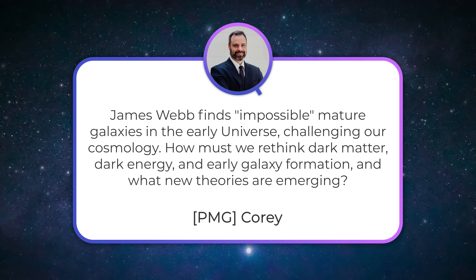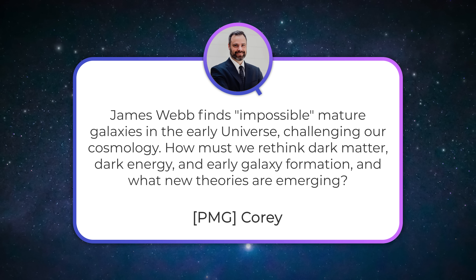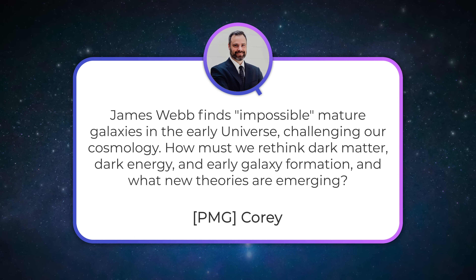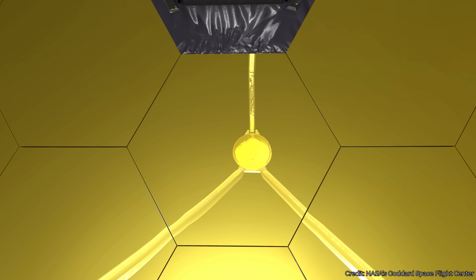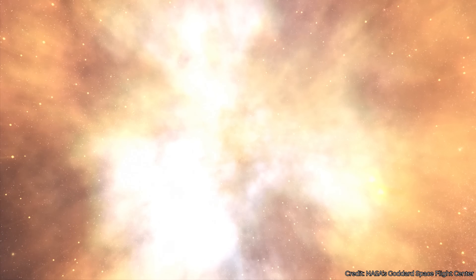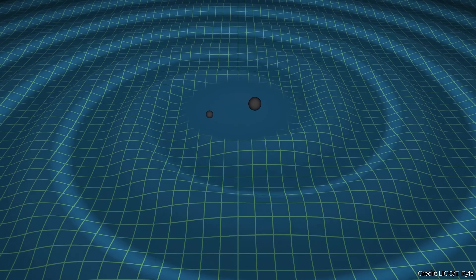PMG Corey asks: James Webb finds impossible mature galaxies in the early universe challenging our cosmology — how must we rethink dark matter, dark energy, and early galaxy formation, and what new theories are emerging? When James Webb first made its observations, it absolutely found examples of galaxies that appear to be overly mature — it's surprising there would be this much galaxy this early. Now that we are three years into observations with James Webb and astronomers have used its most powerful tools, especially its ability to do spectroscopy on these galaxies, we're getting a much better picture. It's coming a lot more in line with existing theories about the cosmology of the universe.